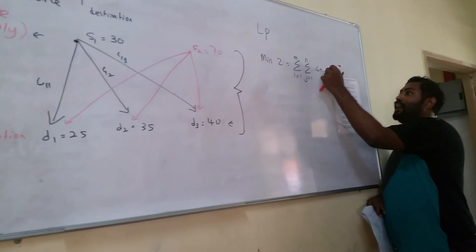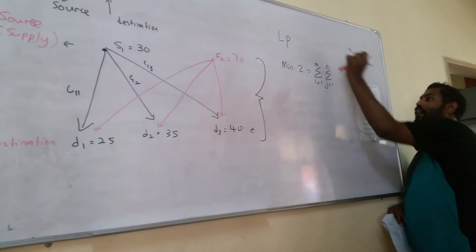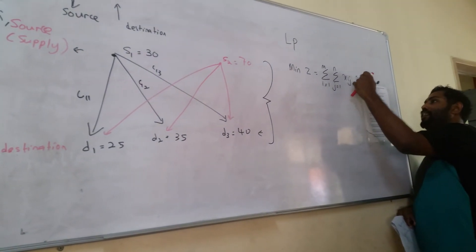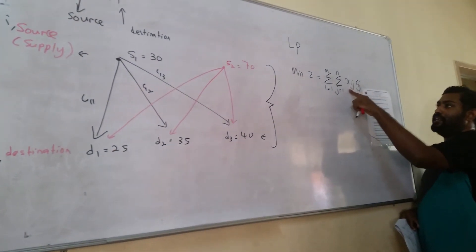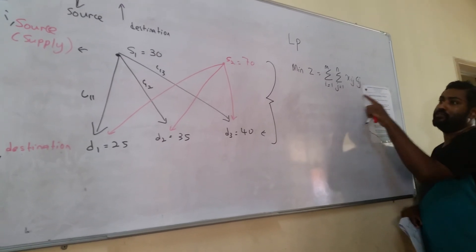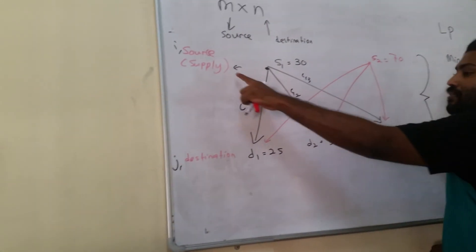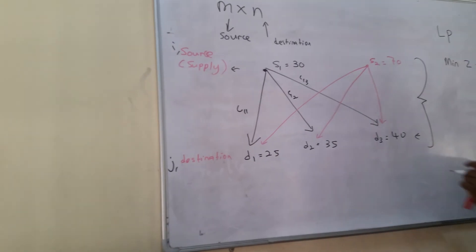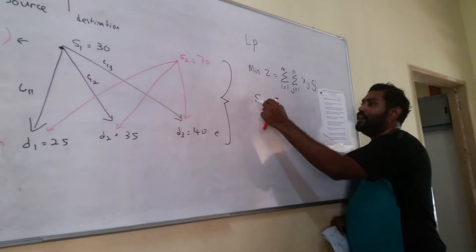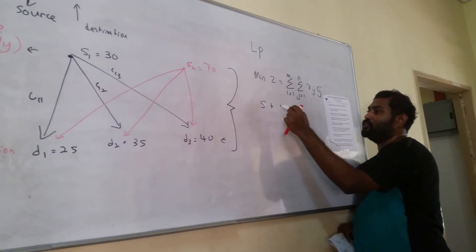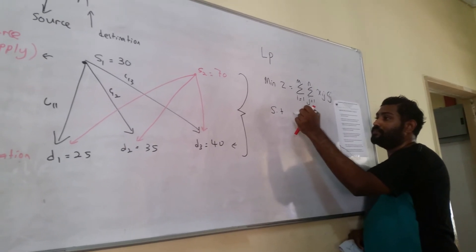Where we know Xij, Cij, Xij, and the cost of the unit to shift one item from a source to a destination. Where we will have our condition, subject to, subject to, subject to. The first one is...